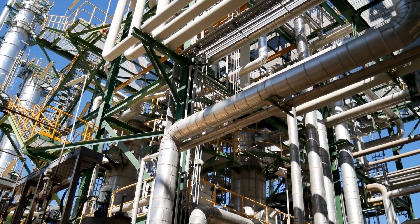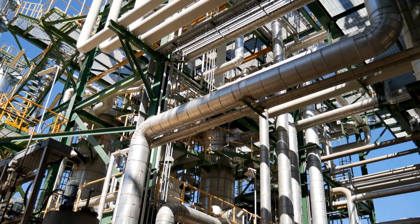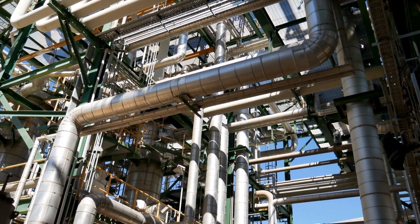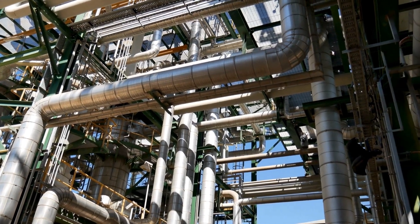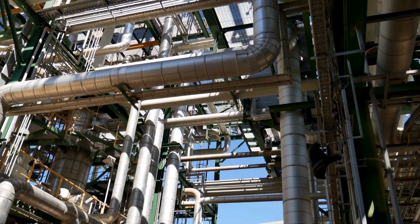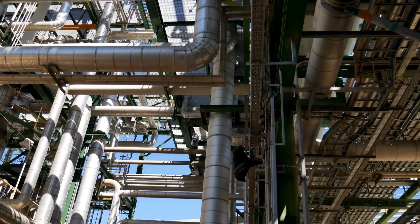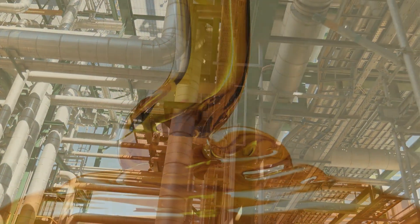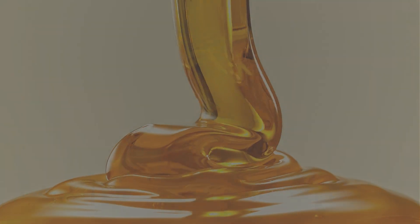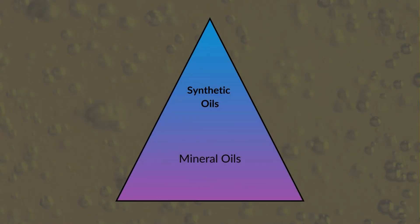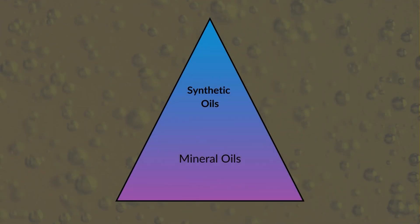Group 2 and Group 3 mineral oils are hydro-treated, a process that removes sulfur and other impurities, producing higher-purity mineral oils with low sulfur and higher saturates for better stability and a higher viscosity index.